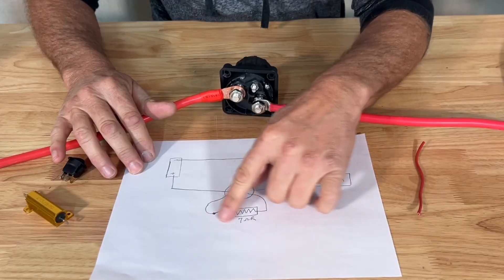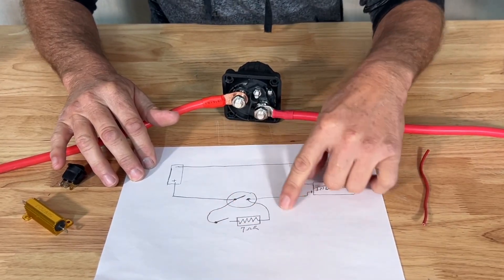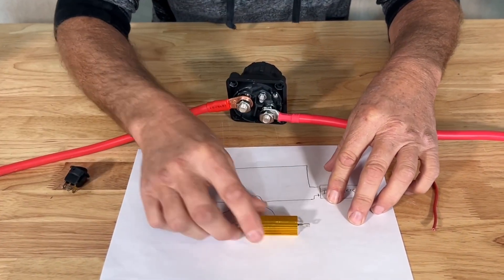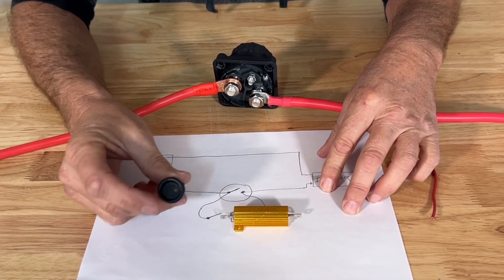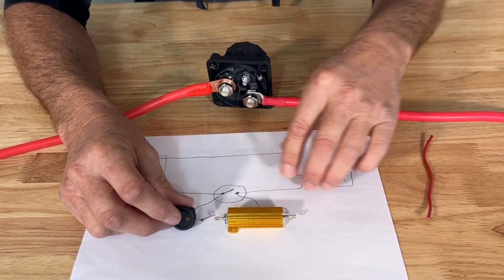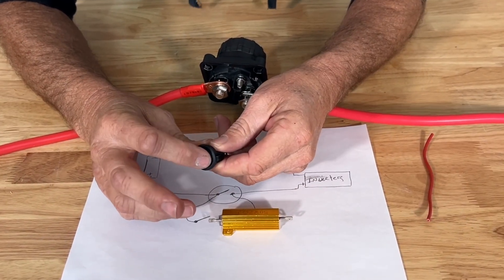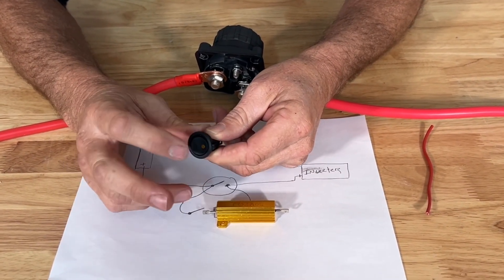So this little section right here is our pre-charged circuit, and what it's composed of is a 7 ohm resistor, we have a momentary switch. This isn't a momentary switch, but just think of a momentary switch as a push button switch, you push it and hold it, and then you let it go and it's off.